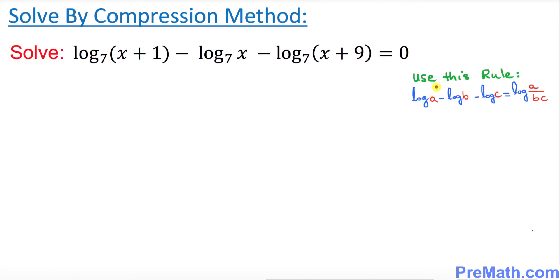We will be using this logarithmic rule and we're going to be applying it to our original equation. By comparing, let's call this part a, this part b, and this part of logarithm c. So wherever you see minus, you're going to divide them. This is how we're going to compress it.